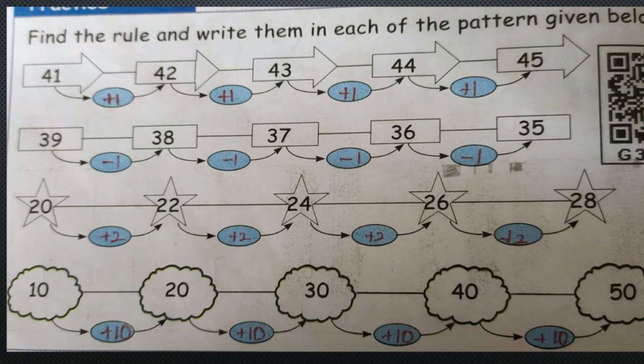Now we will see the last sum: 10, 20, 30, 40, and 50. It is a growing pattern — it grows by plus 10. So 10 plus 10 is 20, 20 plus 10 is 30, 30 plus 10 is 40, and 40 plus 10 is 50.